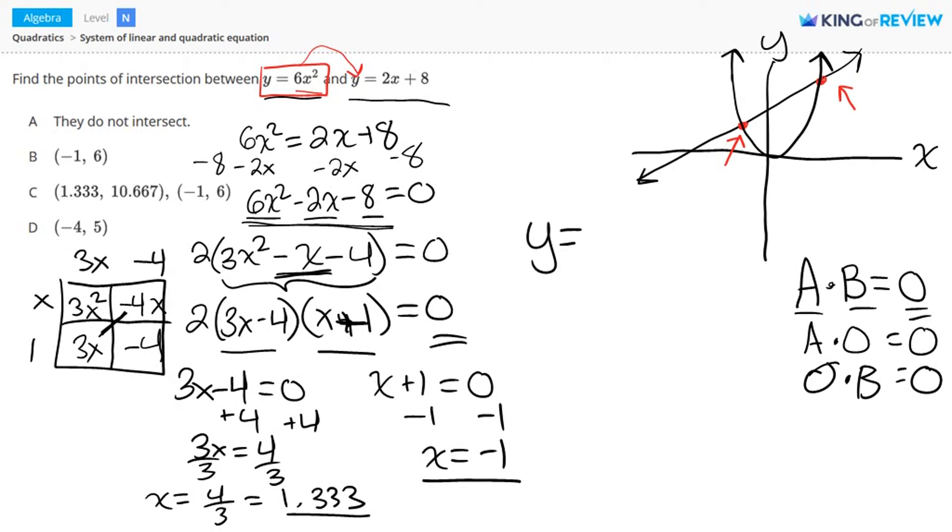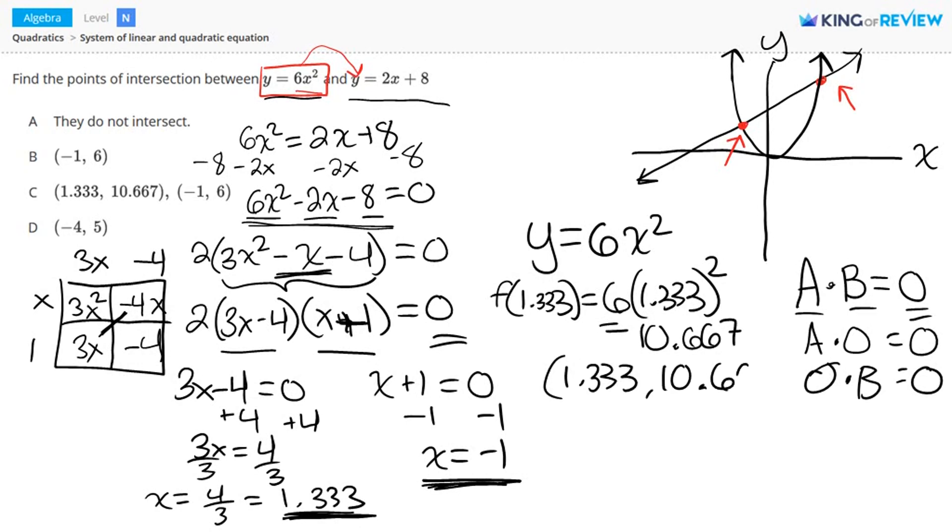Now we need to solve for the y term. So we have the equation y equals 6x squared. And what I'm going to do is put in each of these x values into the equation and solve for y. So f of 1.333 equals 6 times 1.333 squared. And this equals 10.667. So I have a point at 1.333, 10.667. So that might be this coordinate here, this intersection here. So that could be this point of intersection here.